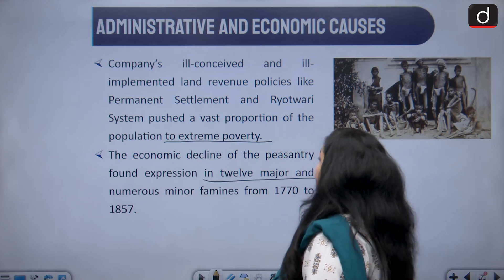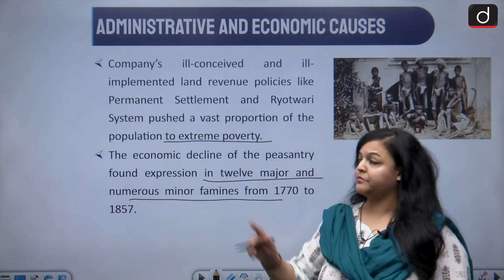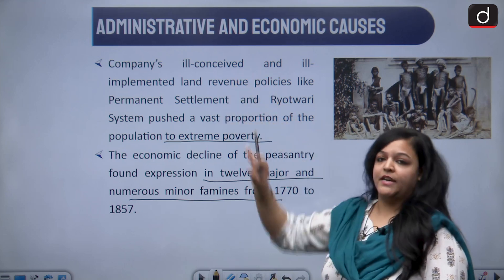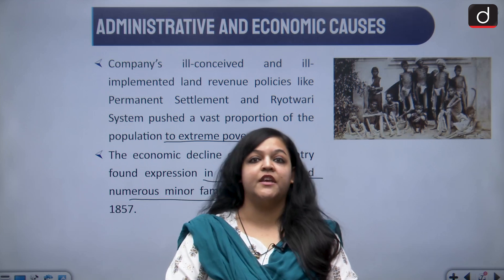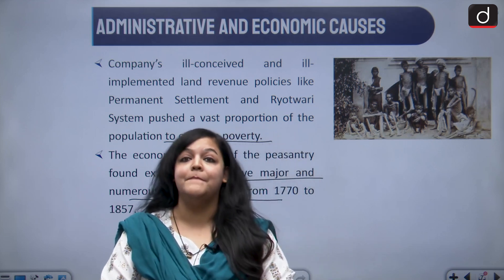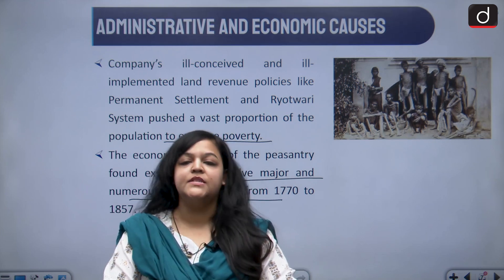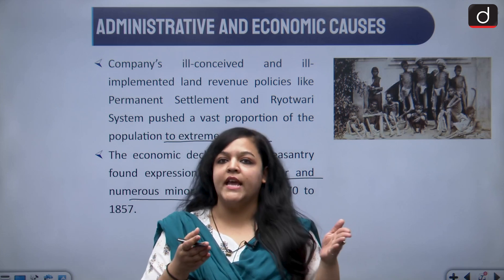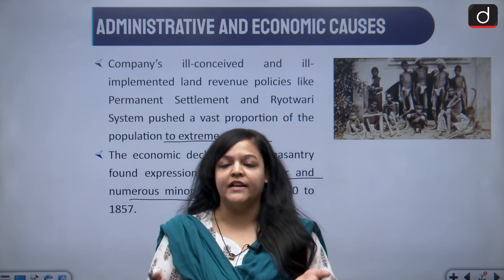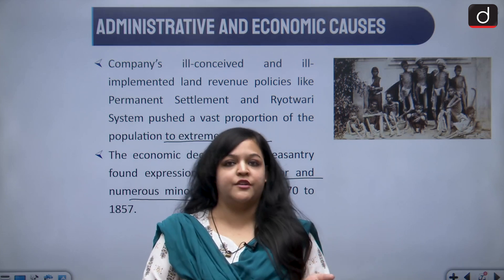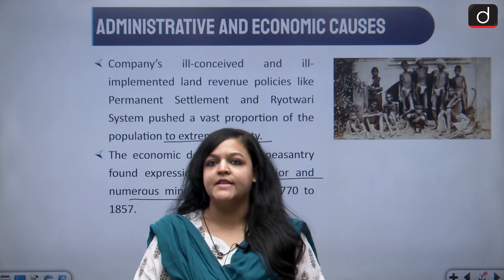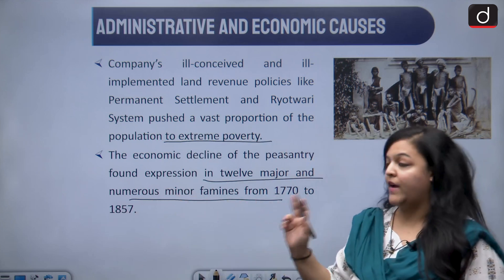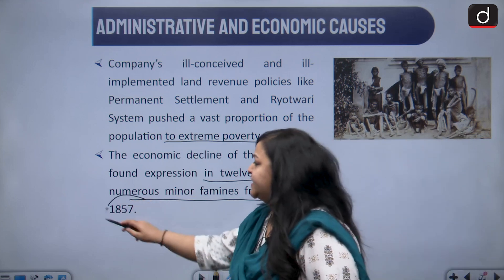The economic decline of the peasantry found expression in twelve major and numerous minor famines. These revenue settlements created major and minor famines across India between 1770 and 1857. Please understand these were not natural famines — they were man-made, because the British were not leaving enough with the peasants to invest back in their land, leading to low productivity and crop failure.